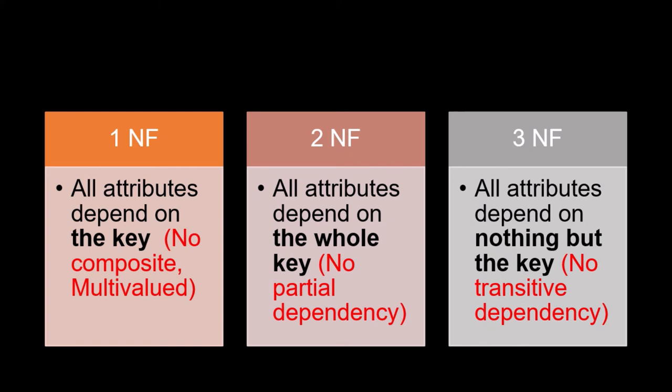To fix this, we split the table into two parts: a student table with student ID, first name, second name, and department ID; and a department table with department ID, department name, and location. In summary: 1NF allows only attributes that depend on the key with no composite or multi-valued attributes; 2NF requires all attributes depend on the whole primary key with no partial dependency; 3NF requires all attributes depend on nothing but the key, meaning no transitive dependency.